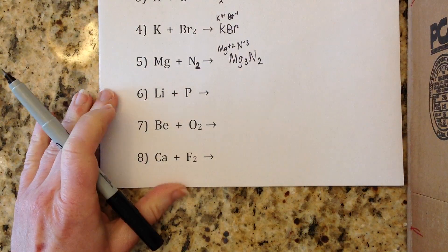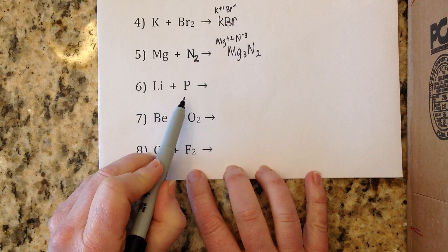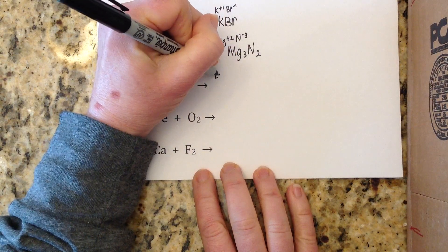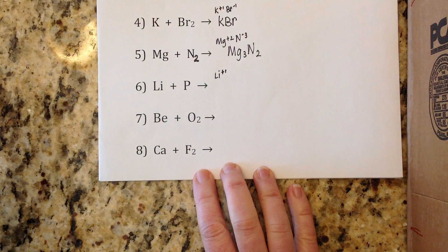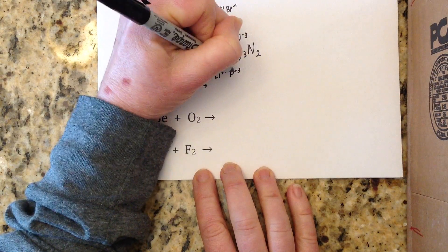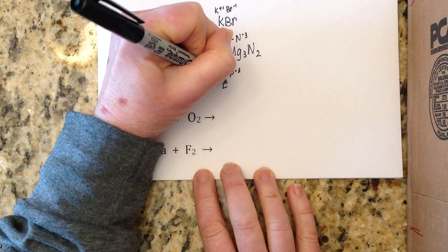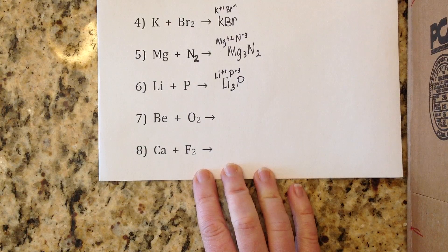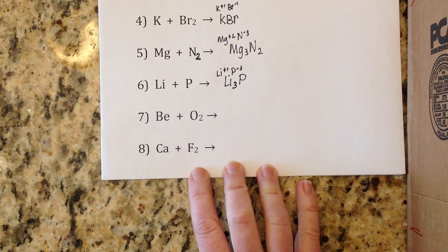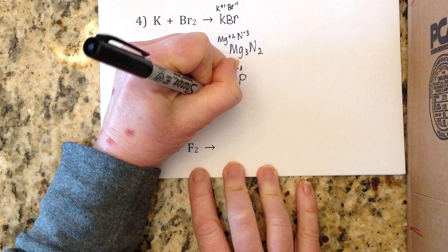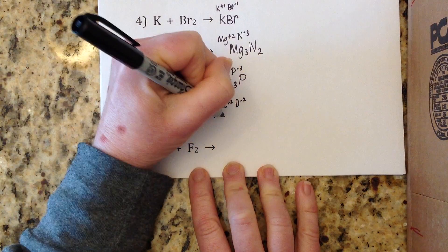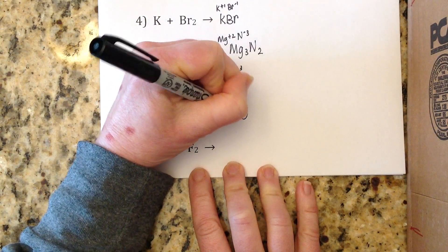Number six: lithium metal and phosphorus. Lithium is Li⁺¹ and phosphide is P³⁻ since phosphorus is in the negative-three column of the periodic table. When crisscrossed, you get Li₃P. Number seven: beryllium and oxygen gas. Beryllium has a plus two charge and oxide is O²⁻. The twos cancel and you get BeO.